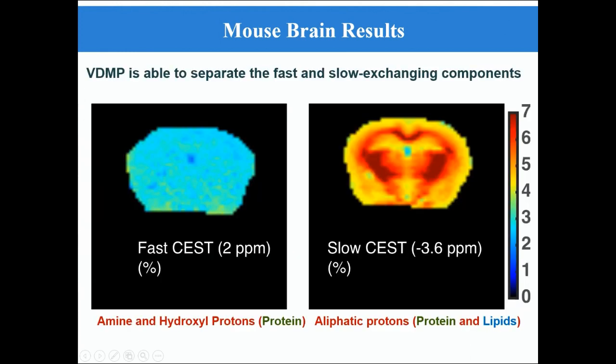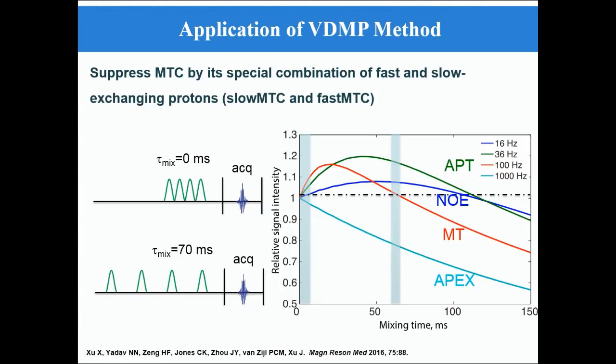The fast and slow exchange maps can be obtained by fitting the VDMP build-up curve pixel by pixel. As we can see, the fast exchange map shows a homogeneous intensity across the whole brain, while the slow exchange map shows strong contrast between white and gray matter. Here are some applications of the VDMP method.